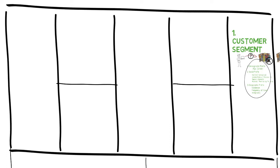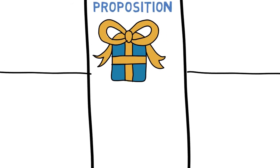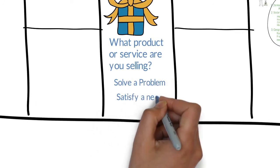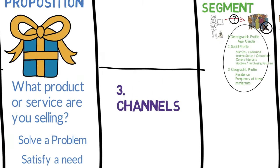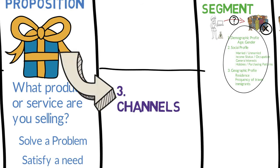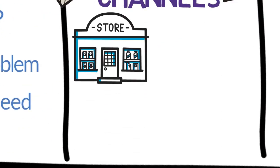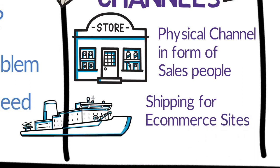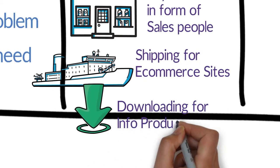You cannot go on following each and every customer selling your product. The second point is value proposition. The value proposition is the product or service which you are selling — something that solves the customer's problem or satisfies a customer's need. The third is channels. A channel is the mechanism of delivering your product or value proposition to the customer segment. It can be physical channels like an offline store with salespeople, or shipping methods for an online e-commerce store, or a downloading method for information products like e-books, software, songs, and movies.